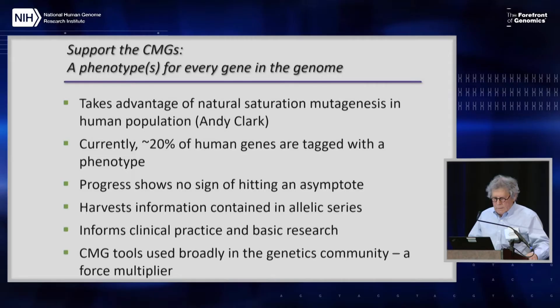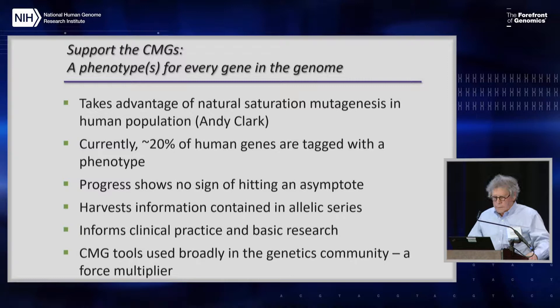Because I think the Centers for Mendelian Genomics have proved to be such a rich source of information about our genes and genomes, I couldn't help but put this in my first two slides. The goal here is identifying a phenotype for every gene in the genome. This approach takes advantage of the natural saturation mutagenesis that Andy Clark mentioned earlier today. Recall that only 20% of human genes are currently tagged with a phenotype, so we're far from complete in this effort.